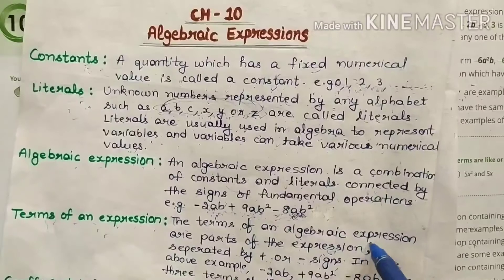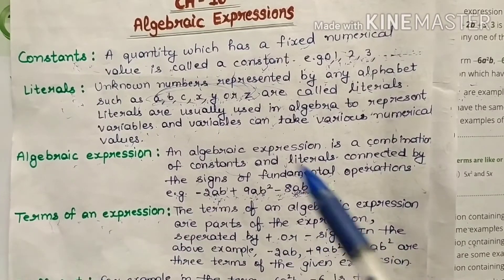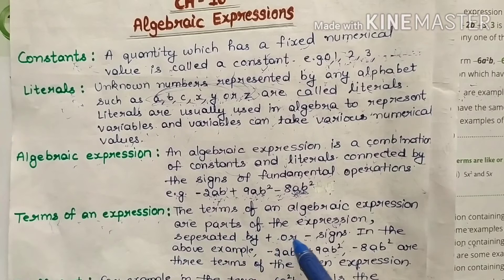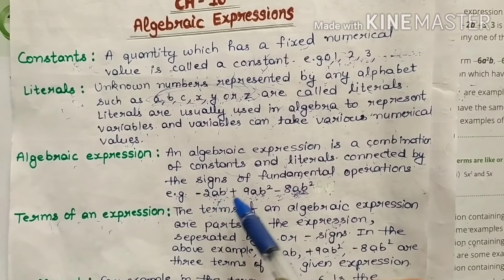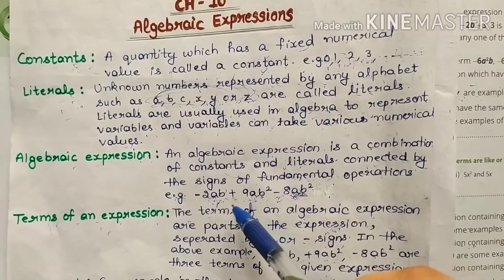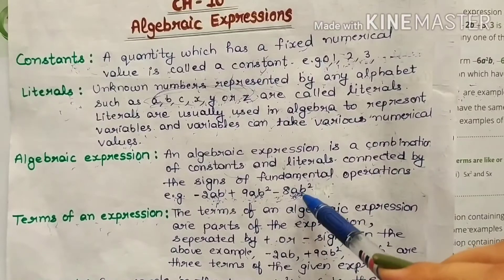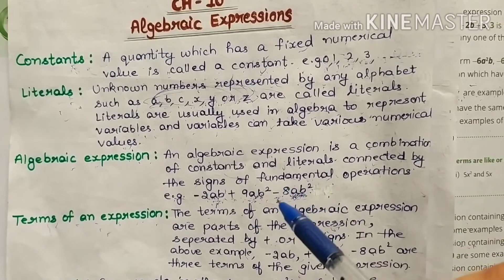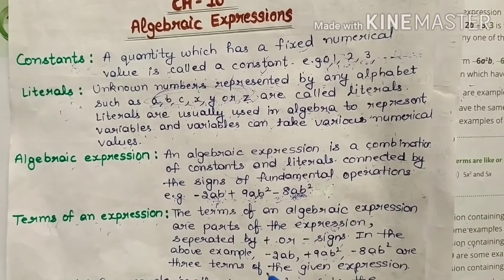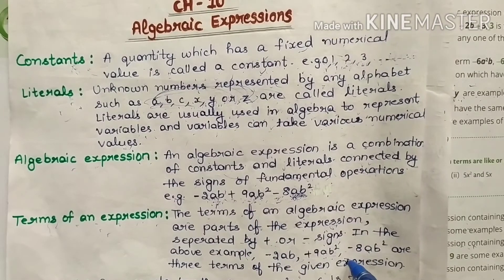Next is terms. The terms of algebraic expressions are parts of the expressions separated by positive or negative signs. In the above example, there are three terms: minus 2AB, 9AB square, and minus 8AB square. Students, take care while you are writing the terms of an expression. Put the commas between the terms.